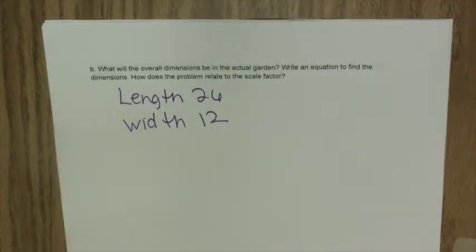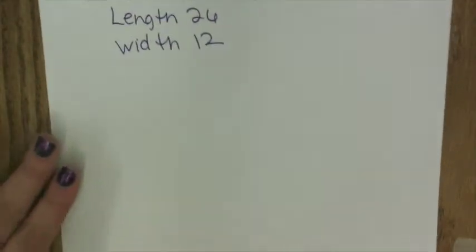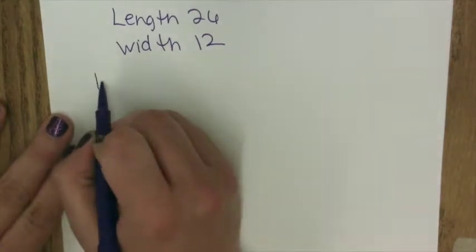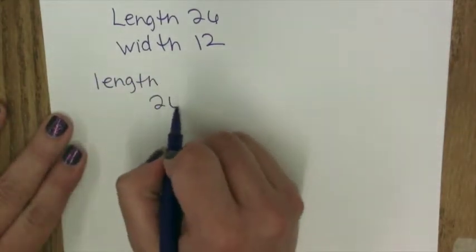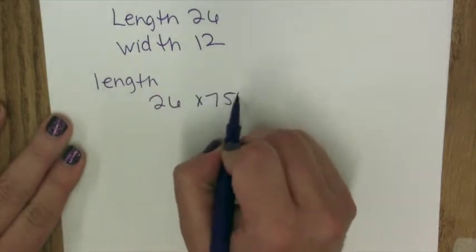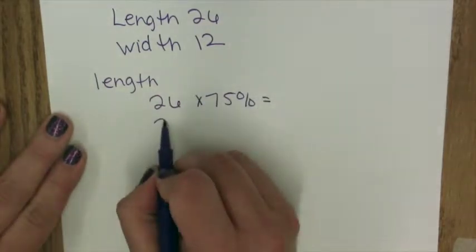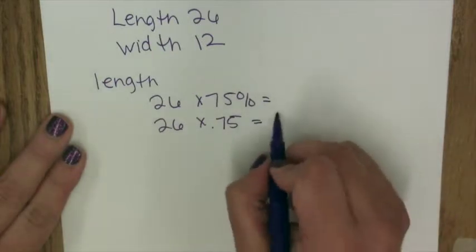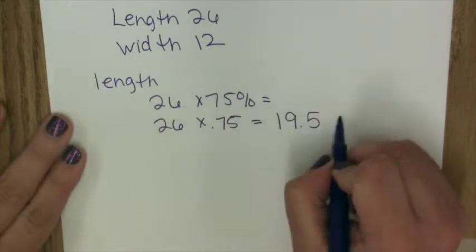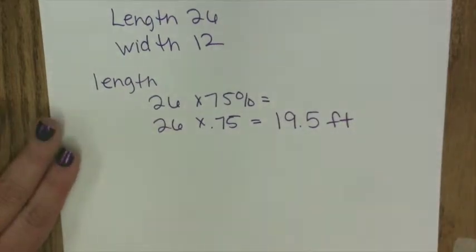So we're going to take each measurement, let's start with length, 26. And we're going to times that by 75 percent. So we're going to change this to a decimal. And when we multiply, we get that the length is actually 19 and a half feet.